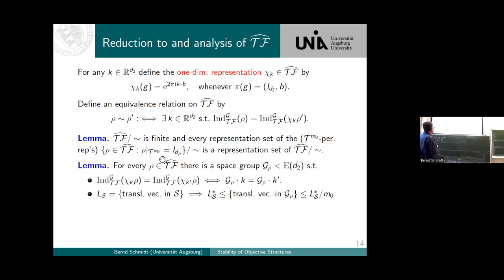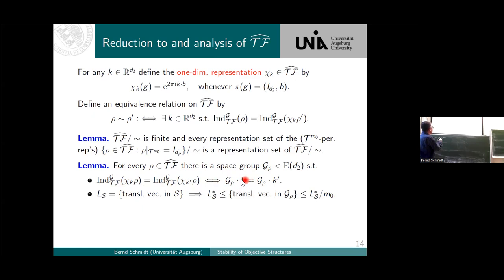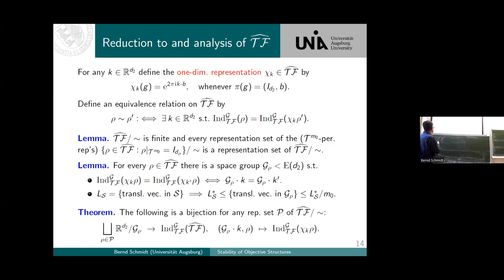Now we are very close to the main theorem. If you have a representation here, we can ask: what does it mean for two representations to be the same? It turns out that if you fix a rotation rho and see which different representations arise by pre-multiplying by such a character, there is a space group associated to rho in the smaller-dimensional space, so basically they are the same as long as they have the same orbit. This means we only have to look into a fundamental domain of such a group.